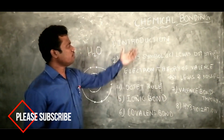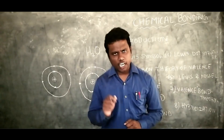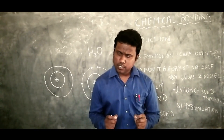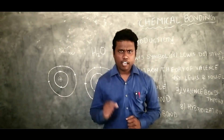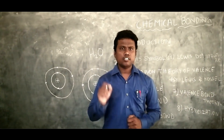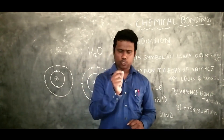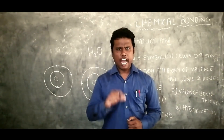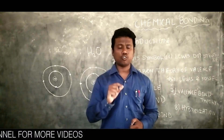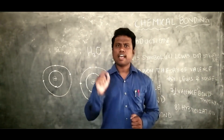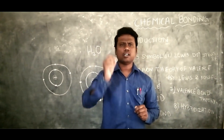Let me begin with the introduction. We studied in our previous chapter the classification of elements, where we observed 118 elements are present in our periodic table. In ninth standard we discussed about atomicity — the number of atoms required to form a molecule. For example, hydrogen, oxygen, and nitrogen are diatomic molecules, meaning two atoms combine together: hydrogen forms H2 gas.